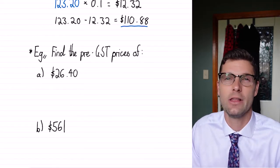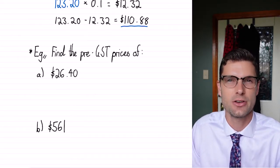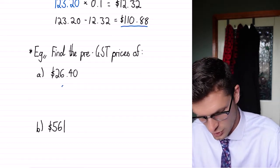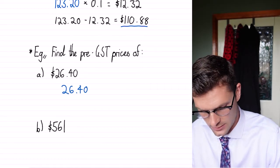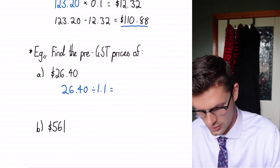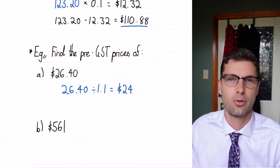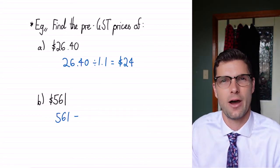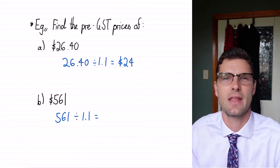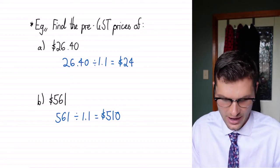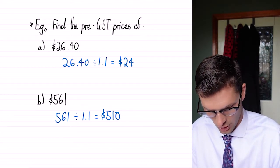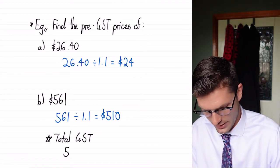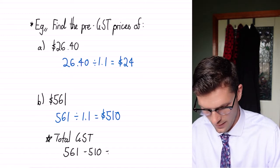In these examples it's really quite simple mathematics — it's only a one-step equation most of the time. For this first one, we've got $26.40, find the pre-GST price. So 26.40 divided by 1.1 is equal to $24, and that's all we've gotta do — the pre-GST price is $24. For B, 561 divided by 1.1 is equal to $510, and that's our final answer. If you're asked for the total GST, you just take post minus pre: so 561 minus 510, which is equal to $51.